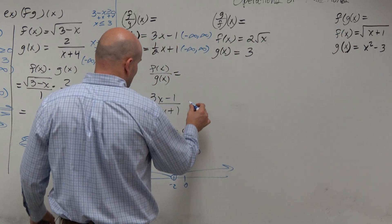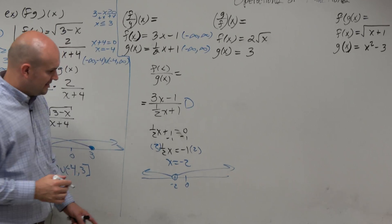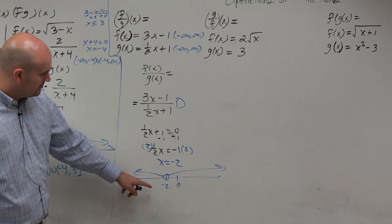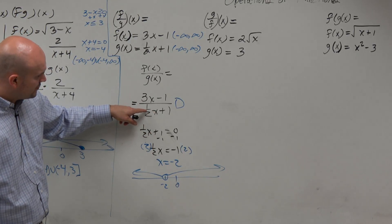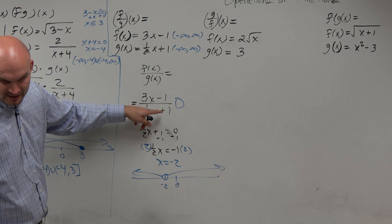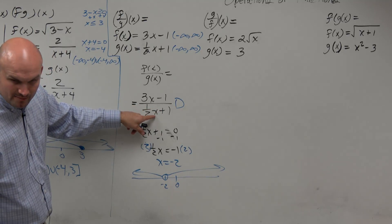So, the domain. What? Why is it negative 2? Yeah, why is it negative 1? Because negative 1 times 1 half plus 1 is negative 1 half. It doesn't get to 0. Negative 2 is the only number that makes the denominator equal to 0.